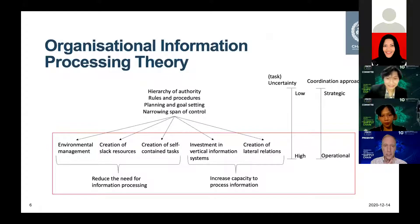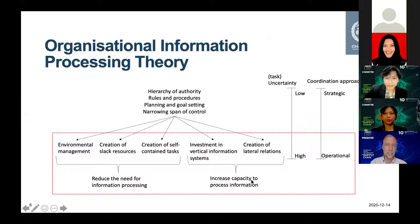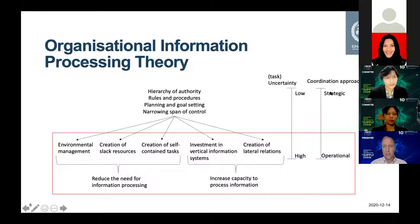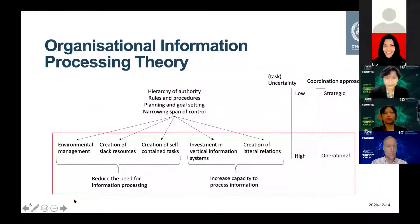The organizational information processing theory revolves around two strategies: on one side you try to reduce the need for information processing, and on the other side you try to increase the capacity for processing information, with sub-mechanisms for each. These are aligned with or opposed to other coordination mechanisms, and are more adapted to the operational level when you have high uncertainty — for example, the operational disruptions we look at.